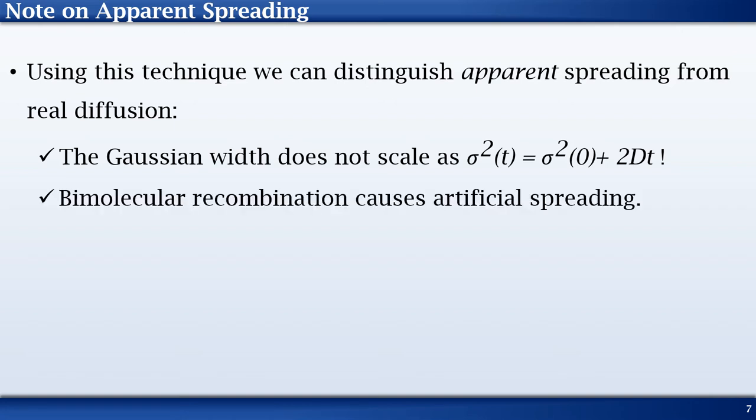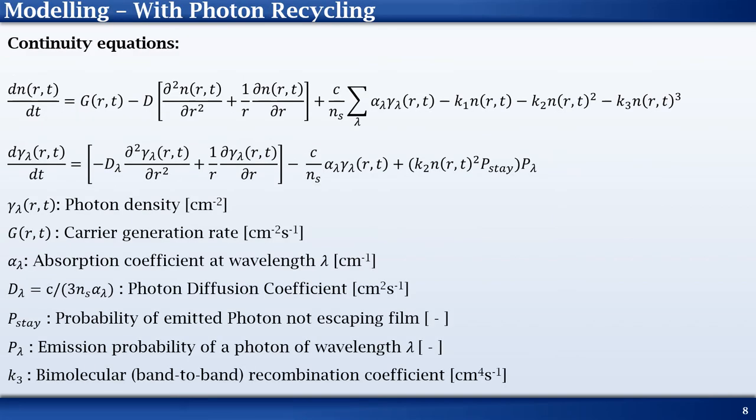However, radiative recombination in perovskites is bimolecular. At carrier densities where band-to-band recombination dominates, which is the case in these experiments, there is an apparent component to the spreading, which is not due to diffusion, but rather increased recombination in the peak of the radial Gaussian distribution as compared to the wings. And this is true even when the value of D is 0, as shown here by the equation for the effective diffusion coefficient.